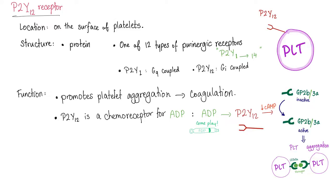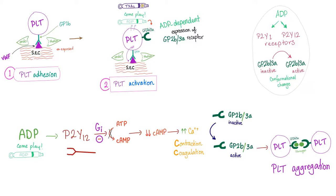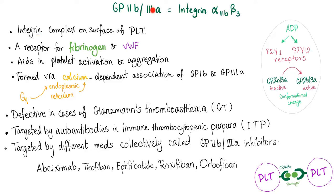The GP2B3A receptor is the old name. The new name is integrin alpha 2B beta 3. It's an integrin — a receptor that takes the whole thickness of the cell membrane. So in your exam, sometimes they want to trick you: instead of saying GP2B3A, which most of you have heard of, they will say integrin alpha 2B beta 3, and students go 'Oh my gosh, I've never heard of this.' It's the same thing as GP2B3A.